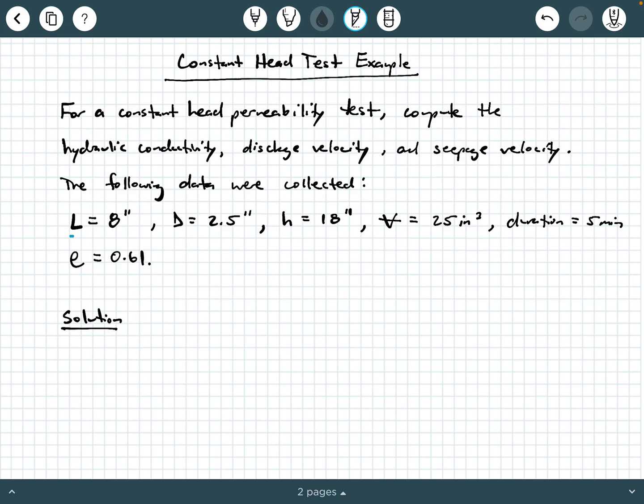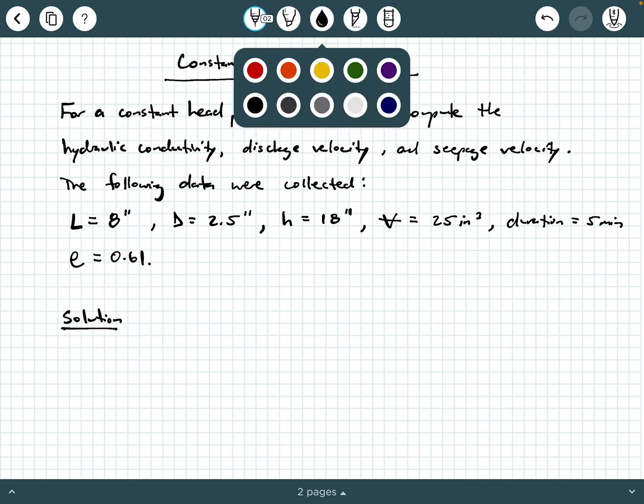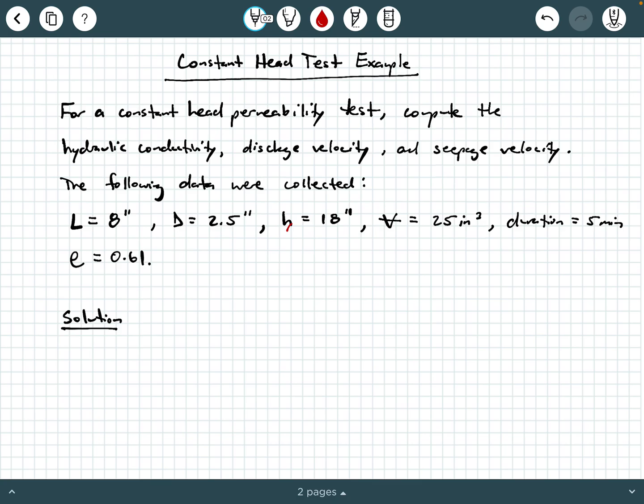So the specimen length is eight inches. The diameter of the soil specimen is two and a half inches. The constant head that was established was at 18 inches. And remember, this was measured likely from a piezometer.